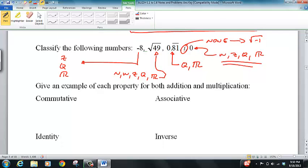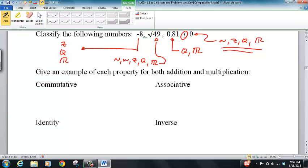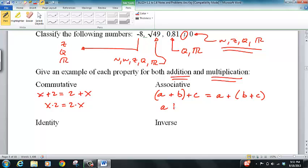Now we do properties. We want to make sure we're all on the same page - what we're allowed to do or not. We have commutative for addition and multiplication. x plus 2 equals 2 plus x. x times 2 equals 2 times x. Associative: a plus b plus c equals a plus b plus c. Same thing here: a times b times c.